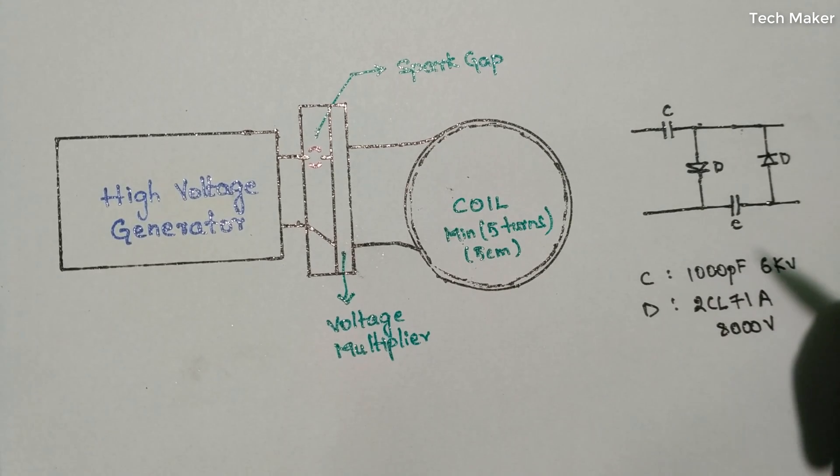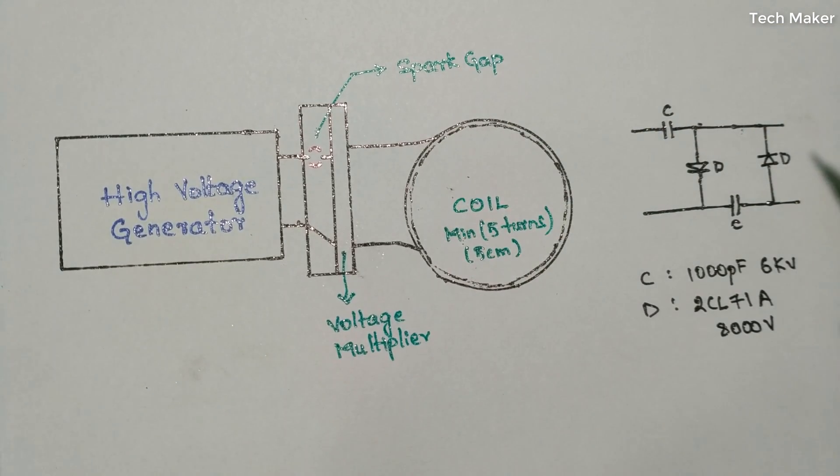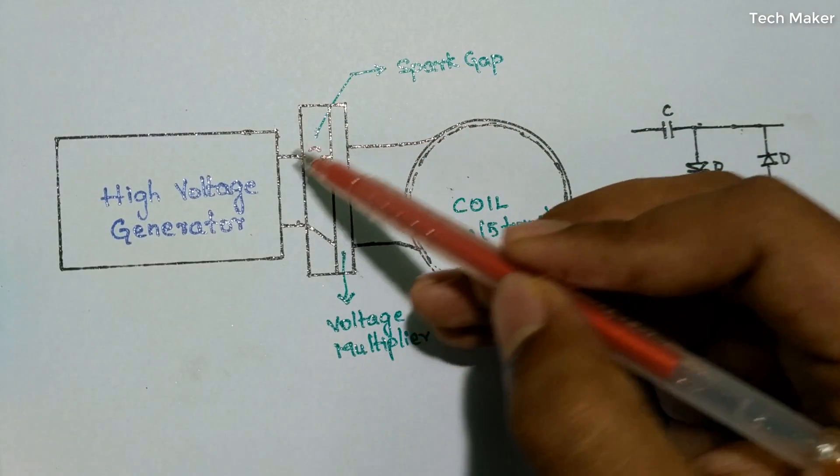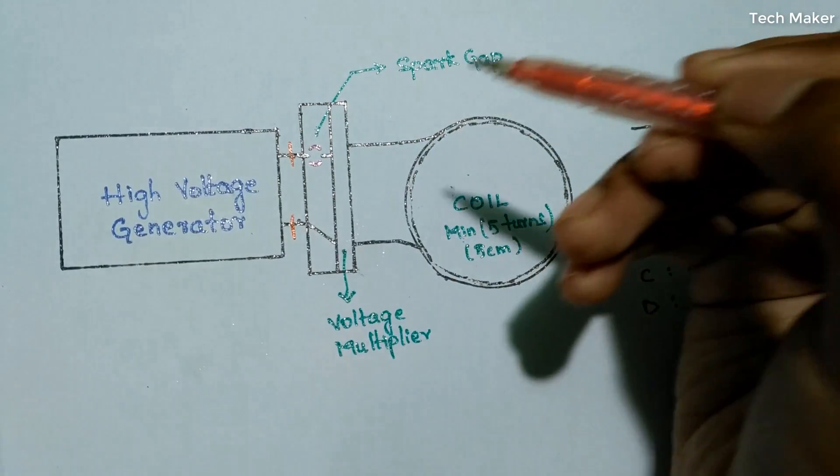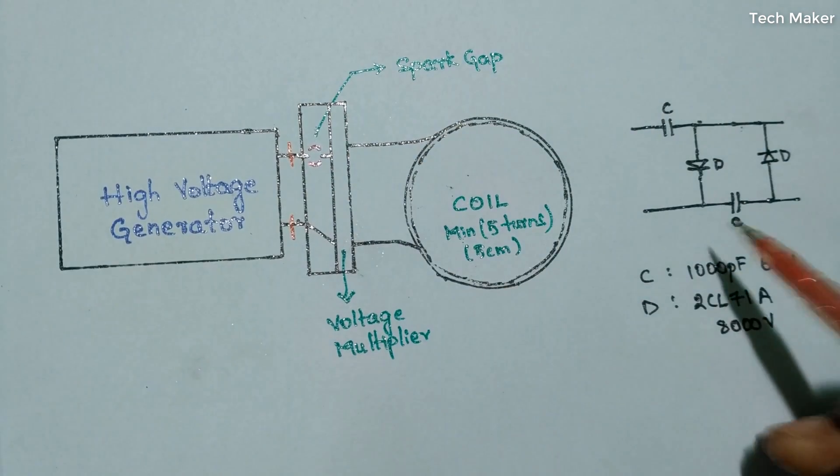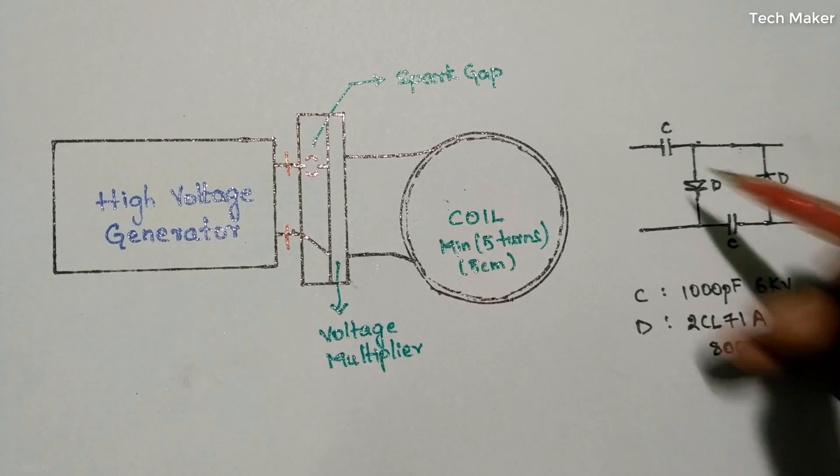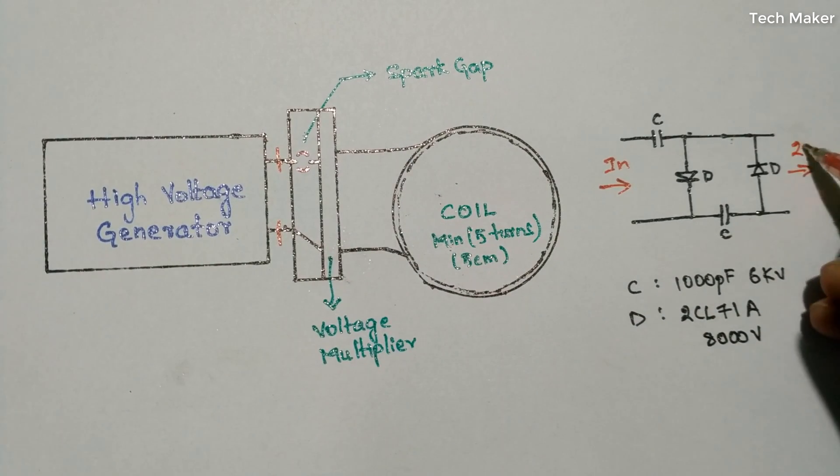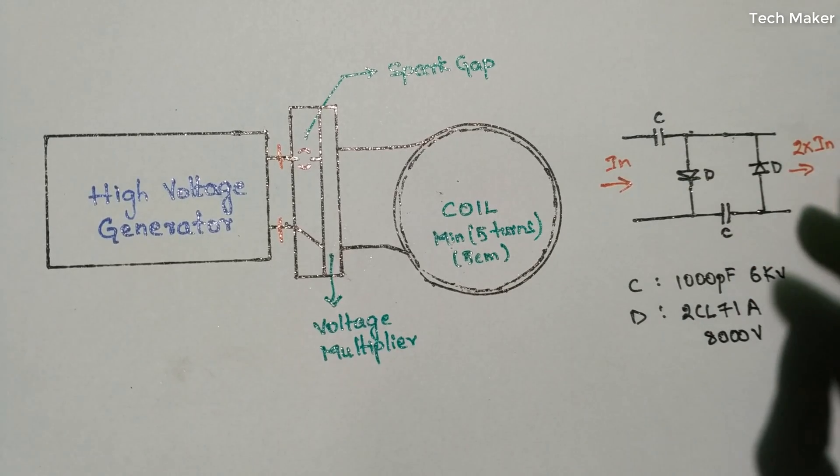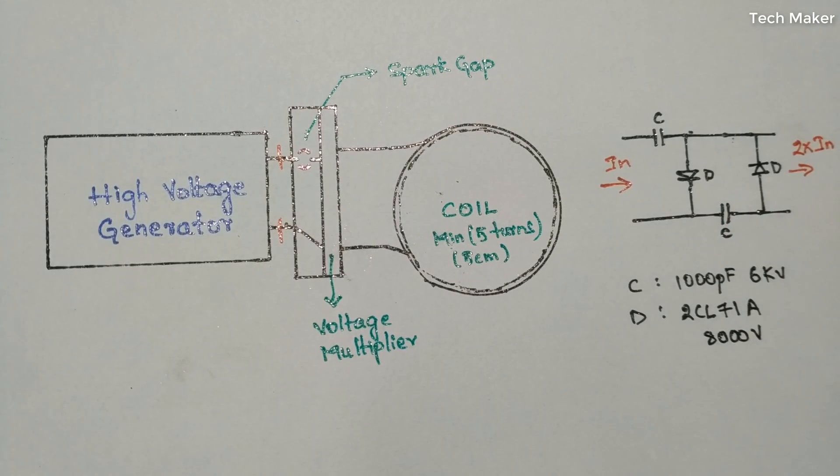Many of them ask they are not getting this spark gap. You need to add a voltage multiplier here before that. This is the voltage multiplier circuit, a single stage voltage multiplier. If you give the input, you will get two times the input. If you want to increase this more than that, you need to add this part here.